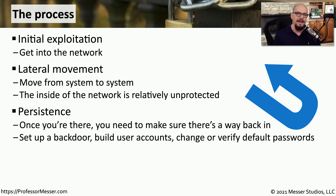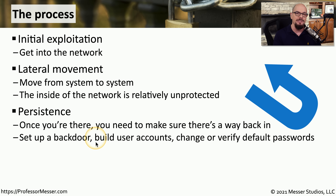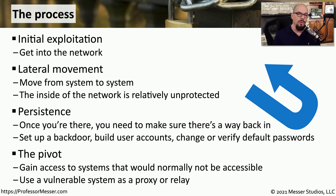Once you've worked hard to gain access, you want to ensure you can return, so you need to create persistence. You'll create a backdoor, reconfigure an existing account, or change default passwords for a service to allow re-entry even if the original exploit is fixed. Many pen testers also take advantage of a pivot point — gaining access to one system as a jumping-off point to reach other systems inside the network, using it as a proxy or relay to access other trusted internal systems.